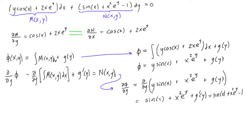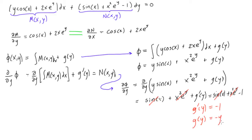Let's look at this. We have sine of x on both sides, x squared e to the y on both sides — we can cancel those out by subtracting from both sides. The only thing we're left with is g prime of y equals negative 1. So we take the anti-derivative and get g of y equals negative y.